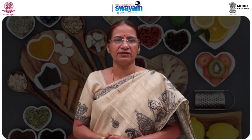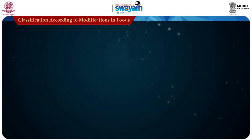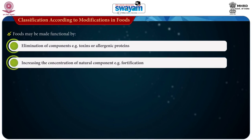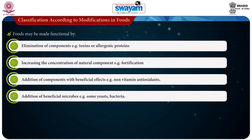Let us begin with the fourth classification — classification according to modifications in foods. Some foods are inherently functional and do not require much modification whereas others do. Foods may be made functional by: first, elimination of components, for example toxins or allergenic proteins; second, by increasing the concentration of natural components, for example fortification; third, addition of components with beneficial effects, for example non-vitamin antioxidants; fourth, addition of beneficial microbes, for example some yeast and bacteria.